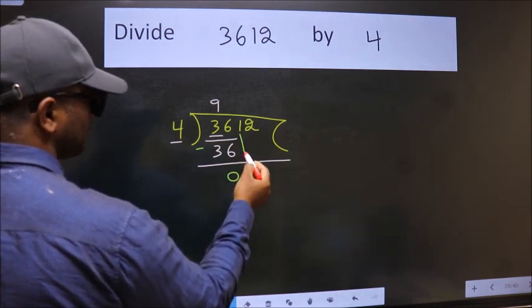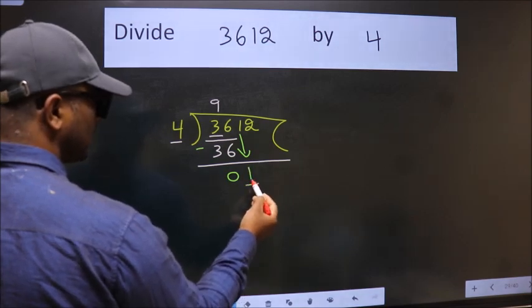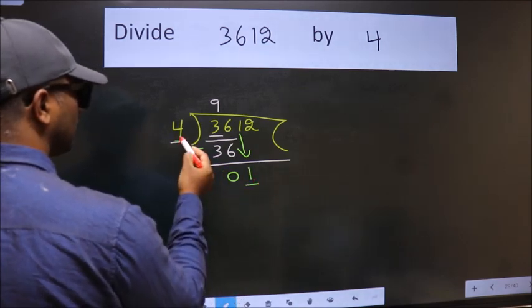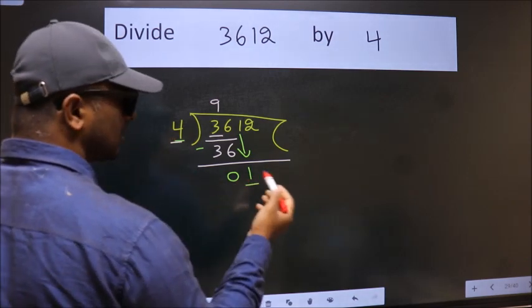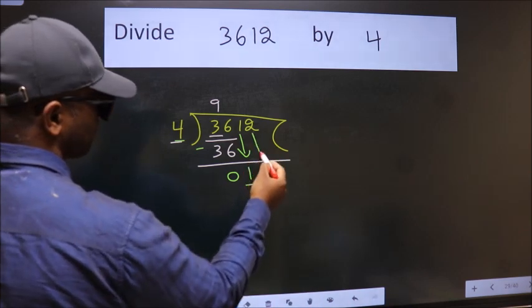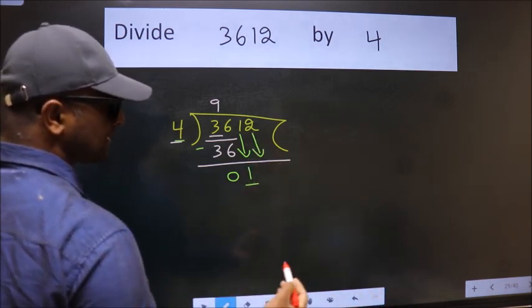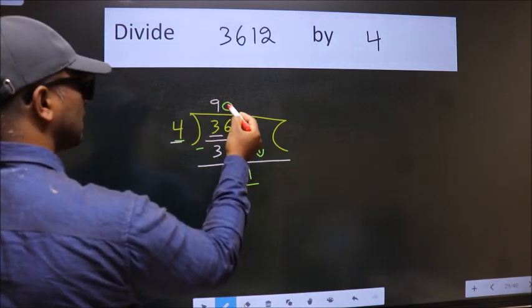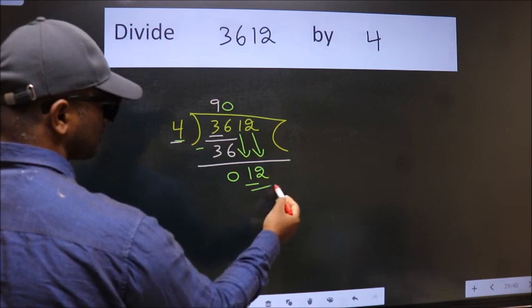After this bring down the beside number. So 1 down. Now here we have 1. Here 4. 1 is smaller than 4. So we should bring down the second number. And the rule to bring down second number is put 0 here. Then only we can bring this number down. So 12.